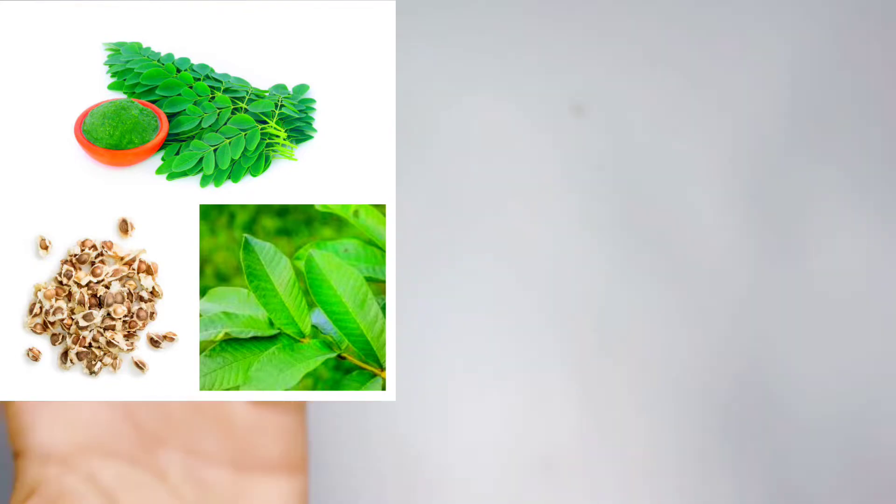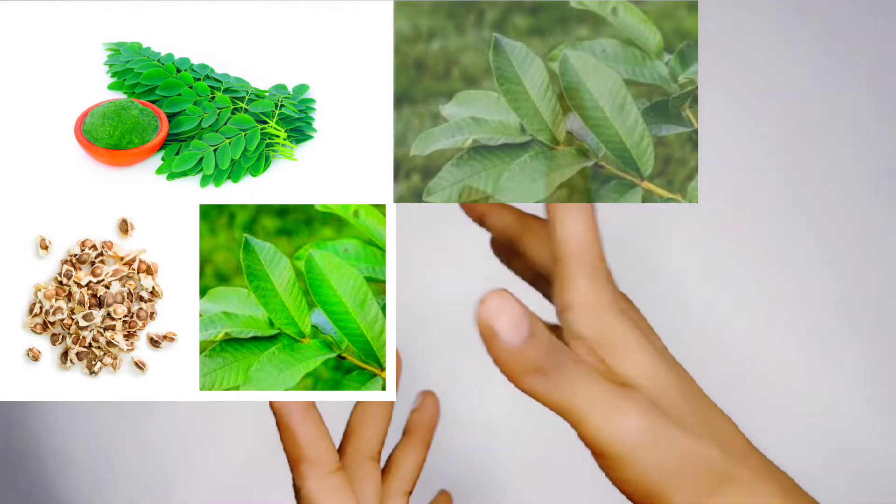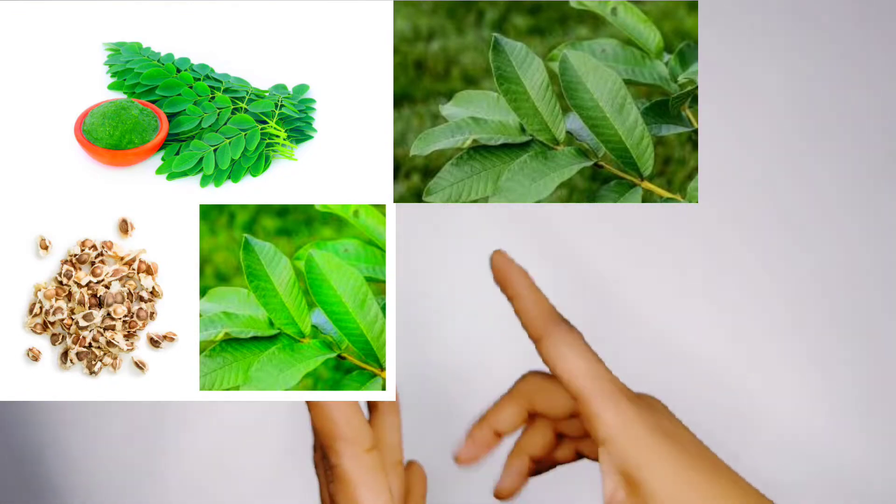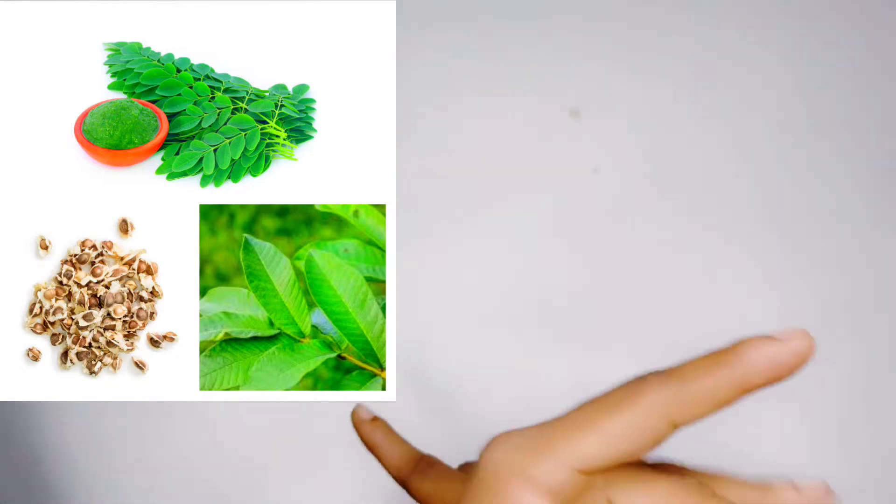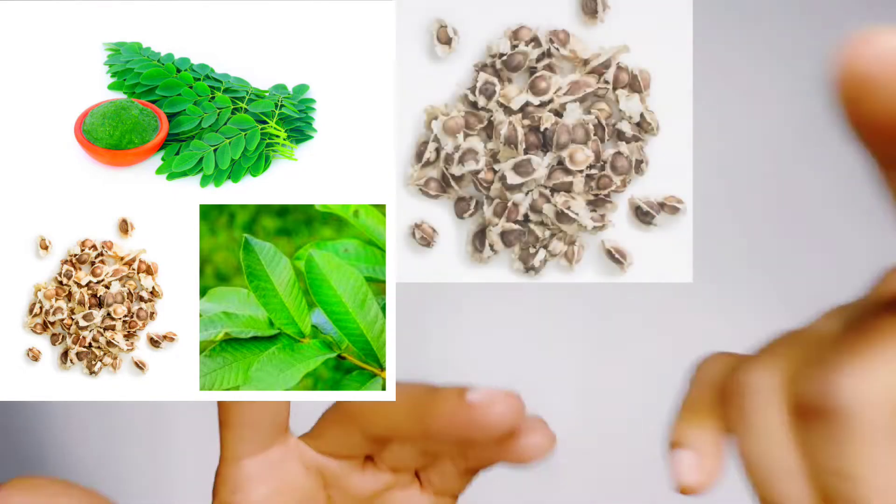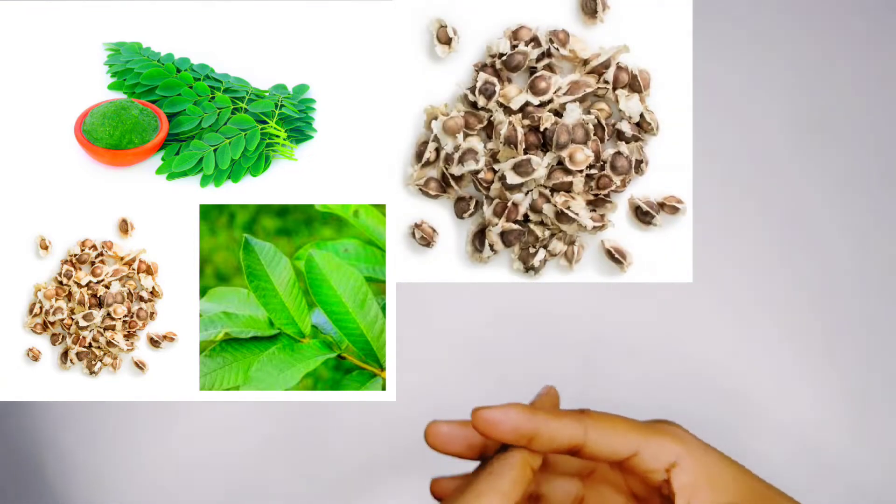Without wasting much of your time, the items you have to get: Number one, you have to get gova leaf. When you get that gova leaf, you also get moringa leaf. You get enough gova leaf, you get enough moringa leaf. You also get moringa seed. I am showing all this on the screen.